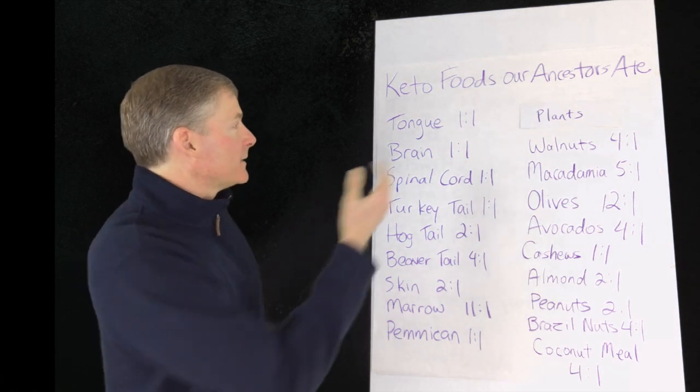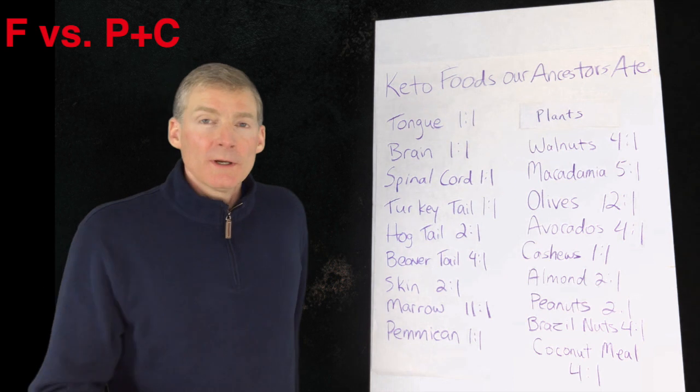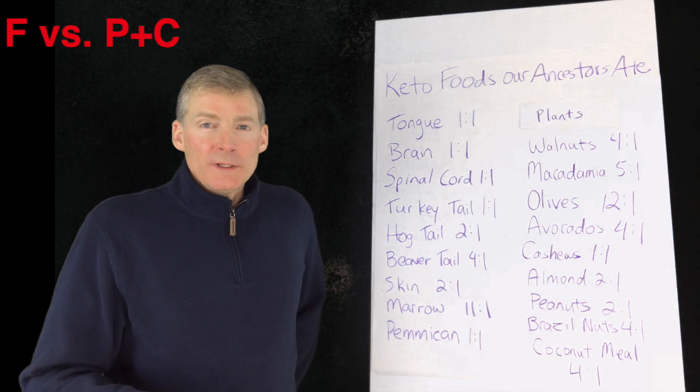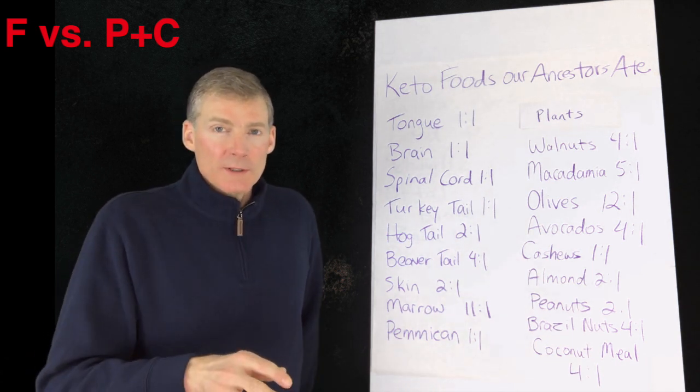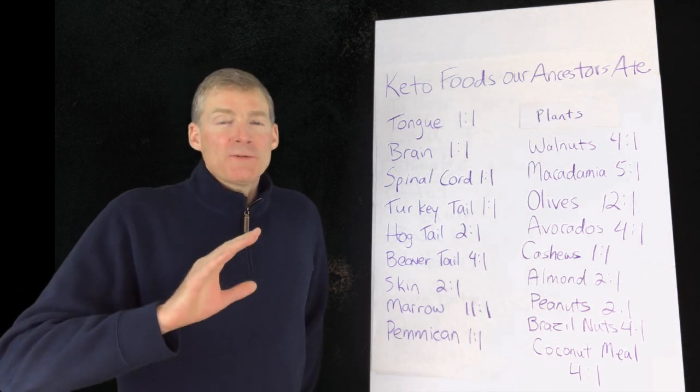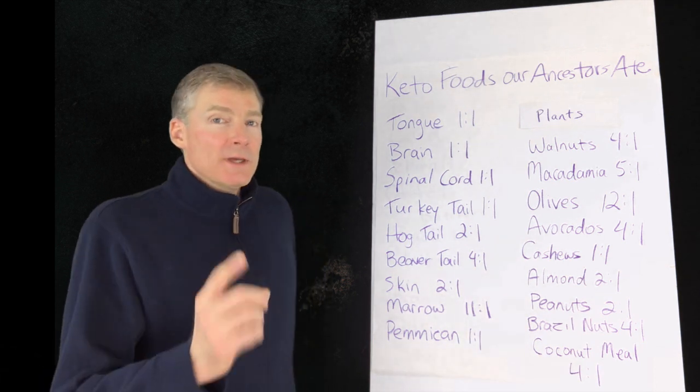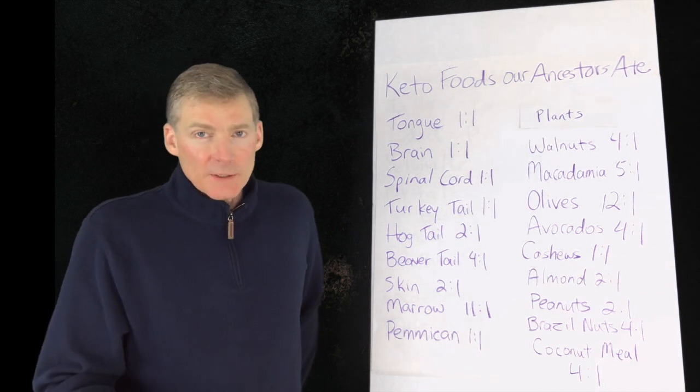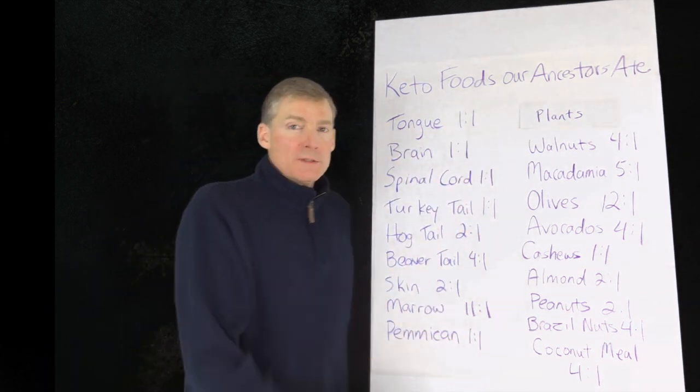Now here we have on this column tongue, which is a one-to-one ratio of fat versus protein plus carbs. When you watch my other videos I talk about, at the very least you want to get a two-to-one ratio to get into ketosis. Now if your body is fat adapted, meaning it very easily gets into ketosis, then a one-to-one ratio would be all it takes.